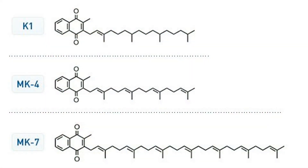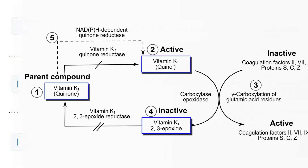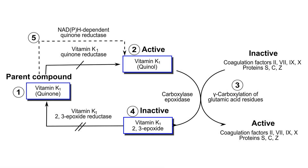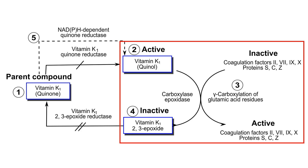Vitamin K is a group of structurally similar vitamins required for carboxylation of certain proteins in the human body, thereby activating them. The classic example is the activation of proteins in the blood clotting cascade in the liver. Vitamin K is used to add a carboxyl group to some of the clotting proteins, converting them to their active form and allowing them to do their job.